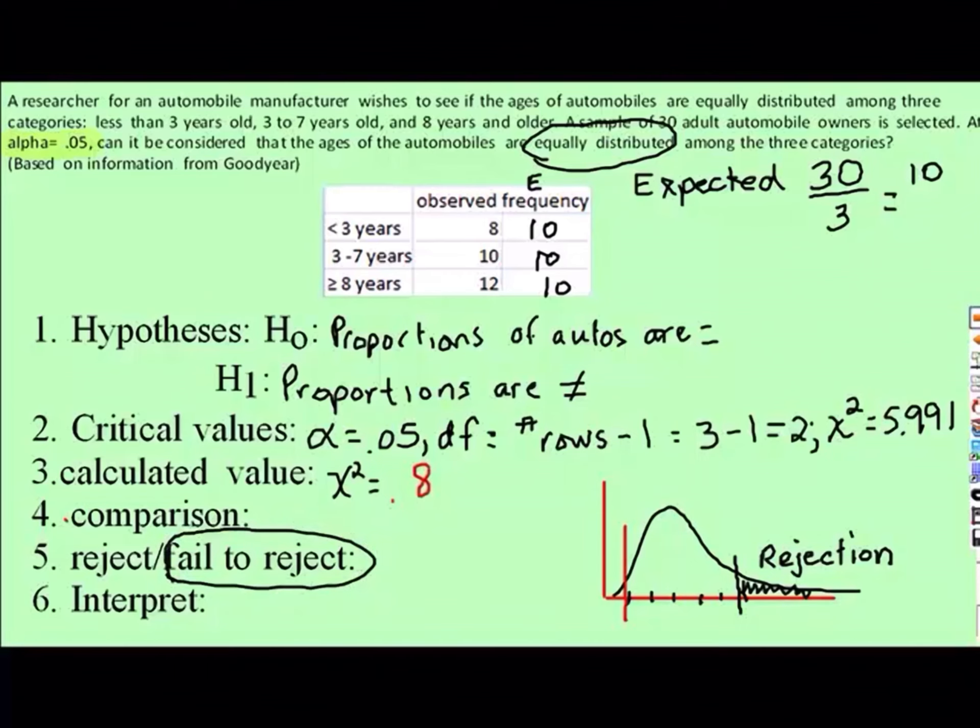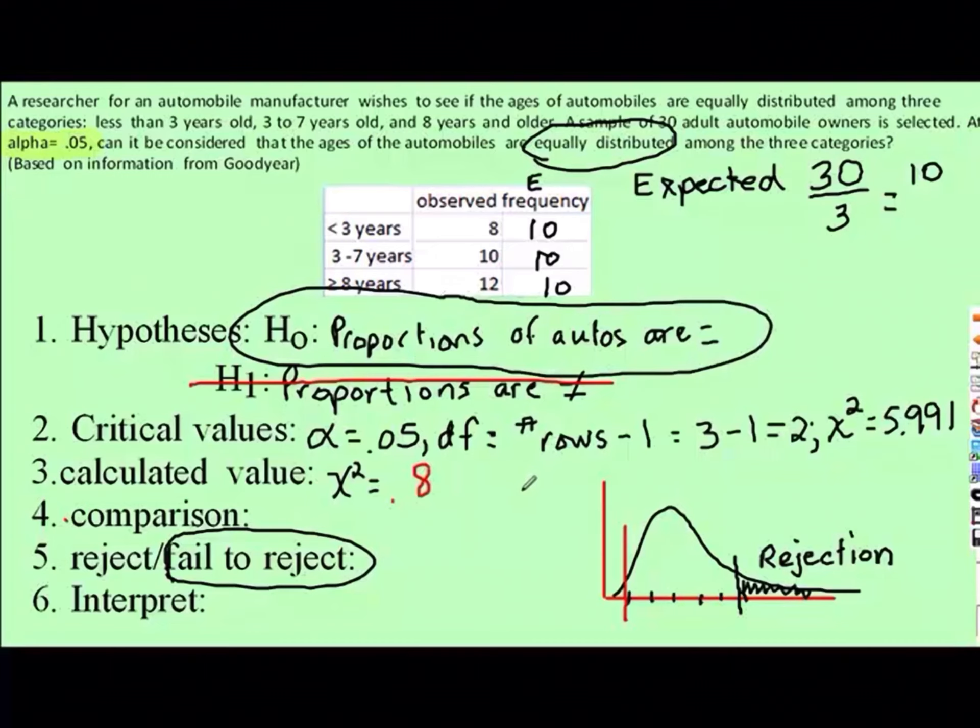I do not think my research shows what I was trying to find out. I think, based on the information I currently have in my sample of 30, the proportion of the automobiles is equal for age.